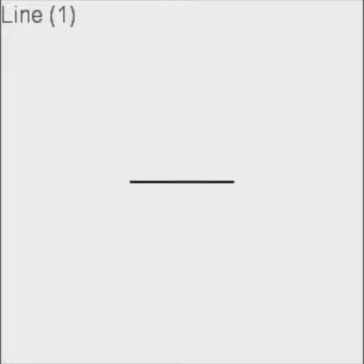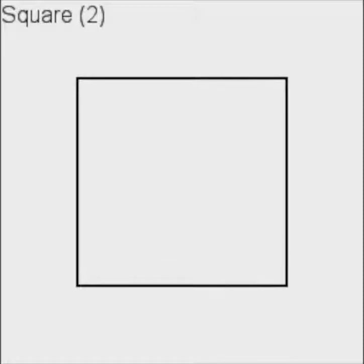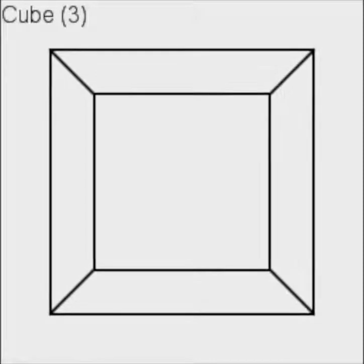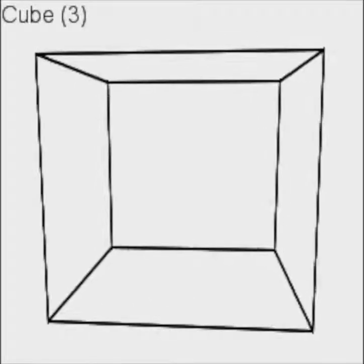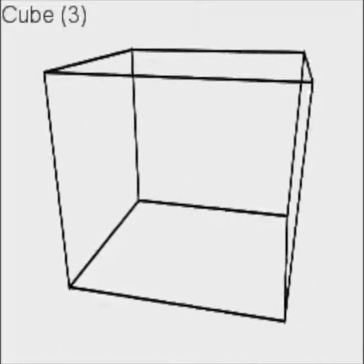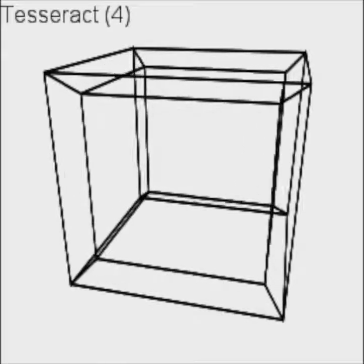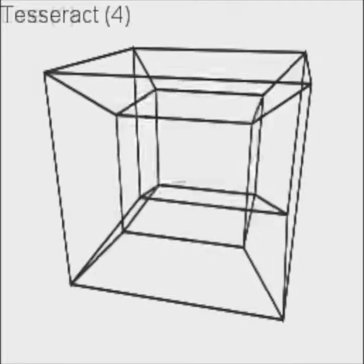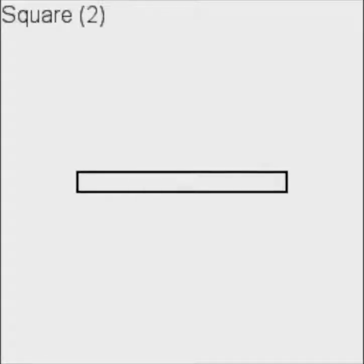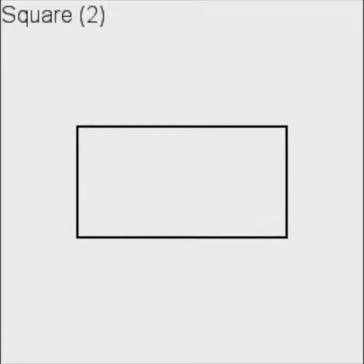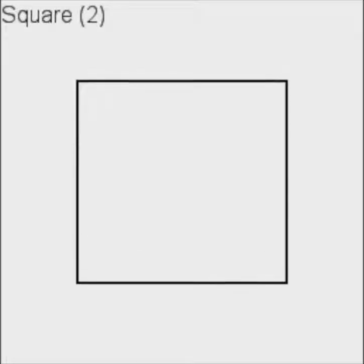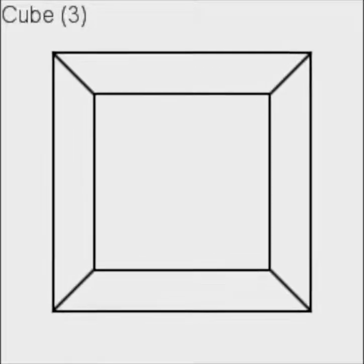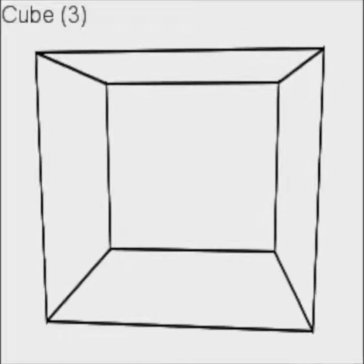Just as a cube is obtained by, in a sense, thickening a square in the third dimension — which can be imagined as stacking infinitely many infinitely thin sheets of paper — a tesseract is a cube thickened in the fourth dimension. We can't imagine this because we can't think four-dimensionally, but it's possible to appreciate that just as perspectives of cubes can be drawn on a 2D surface, so real cubes can serve as perspectives of tesseracts.